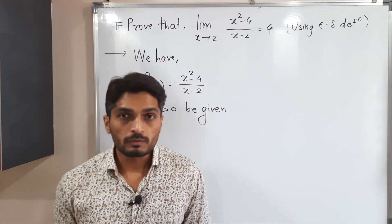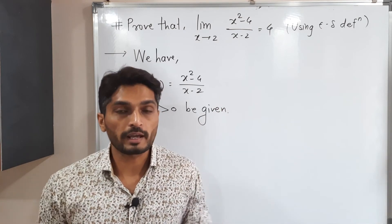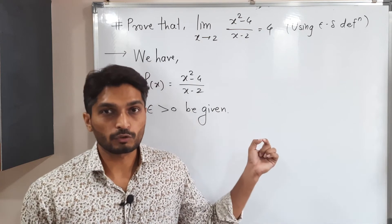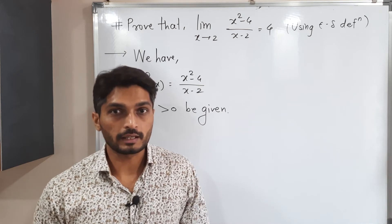Let epsilon greater than 0 be given. Now what will we do? First of all, we will do some basic calculation. That means I will find the value of mod f of x minus that limit. And we will simplify it first. And then we will go for selection delta.